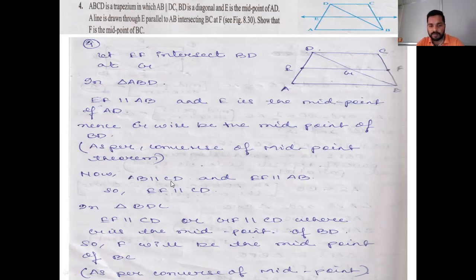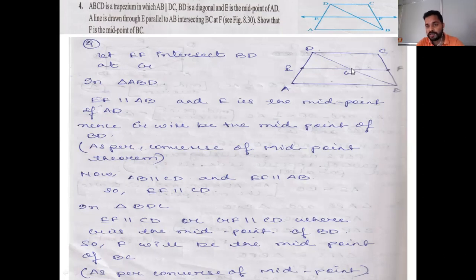Since AB is parallel to CD and EF is parallel to AB, EF is also parallel to CD. Now consider triangle BCD. GF is parallel to CD, and G is the midpoint of BD. By the converse of the midpoint theorem, the line from midpoint G parallel to CD bisects the third side. Therefore F is the midpoint of BC.